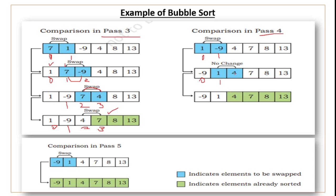At the end of the passes, you have -9, 1, 4, 7, 8, 13 — that is your complete sorted list. There are 4 already sorted elements: 4, 7, 8, and 13. In the next iteration, compare -9 and 1 — since -9 is smaller, there is no swap. The list is now fully sorted in ascending order.